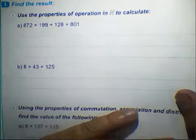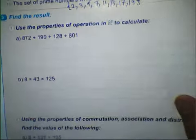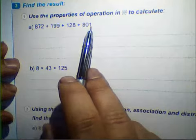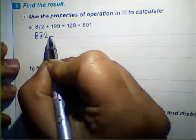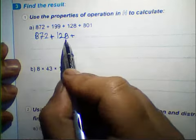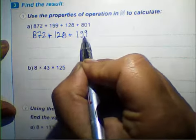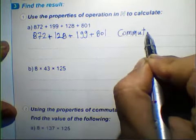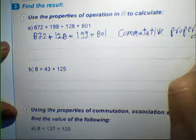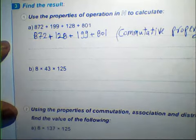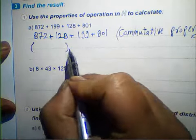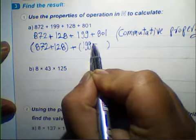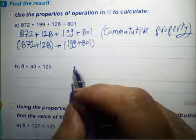Find the result. Use the properties of operations in N to calculate: 872 plus 199 plus 128 plus 801. First, write 872 plus 128 together because 8 plus 2 equals 10. Then write 199 plus 801 using the commutative property. Then use the associative property, putting 872 plus 128 and 199 plus 801 in parentheses.